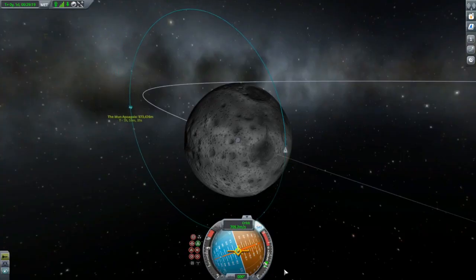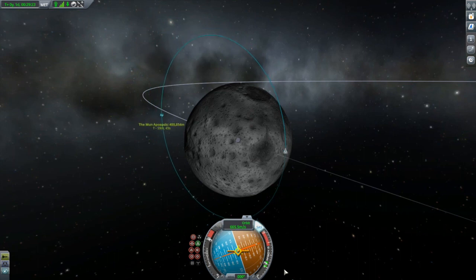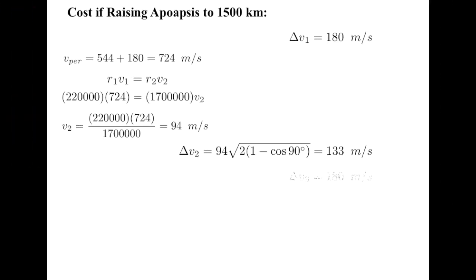We can now perform a third burn at periapsis to bring us back down to our 20 kilometer circular orbit, costing another 180 meters per second. Adding this all up gets 493 meters per second, which is 36% cheaper than performing the inclination change directly in low orbit.